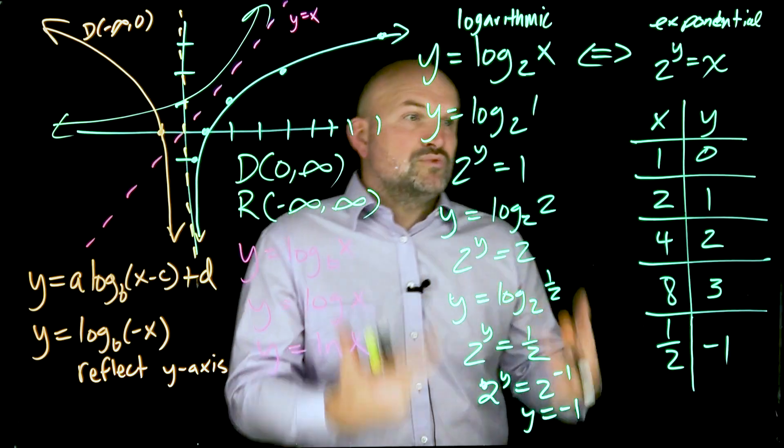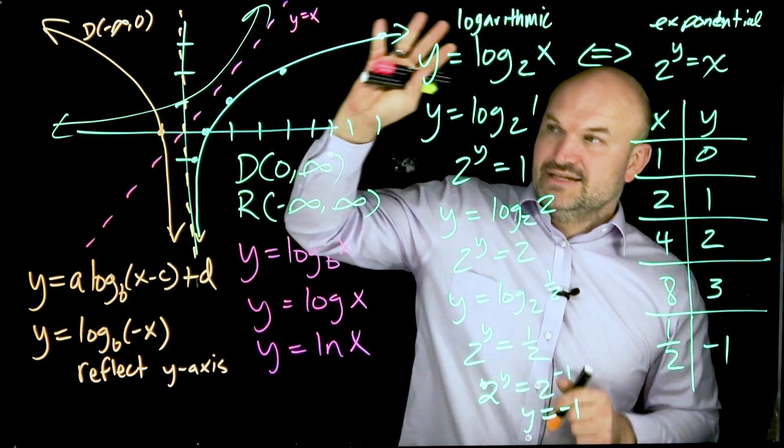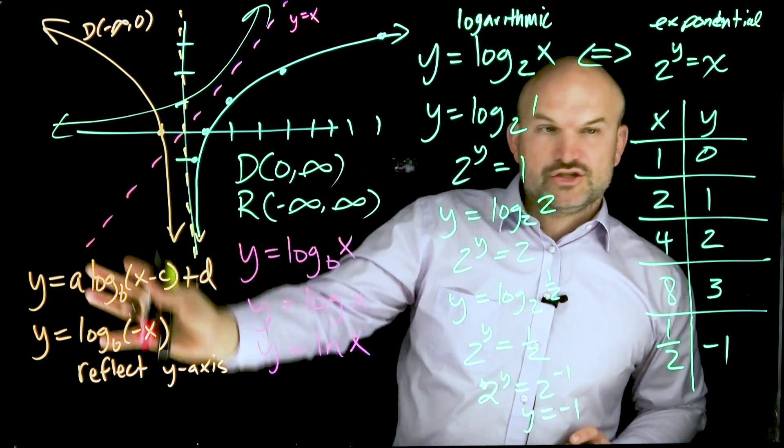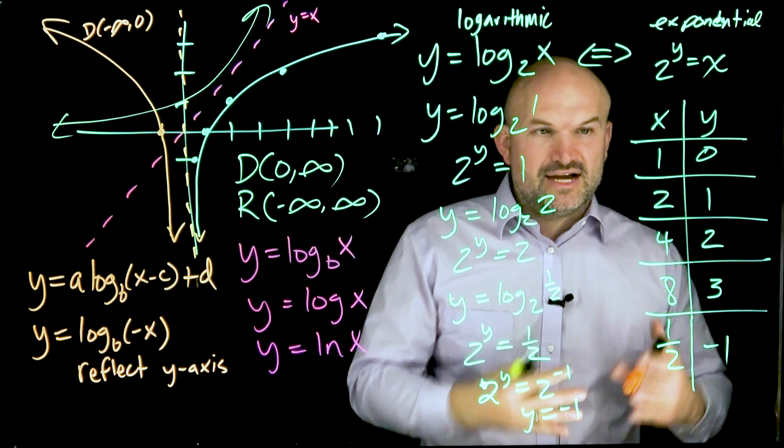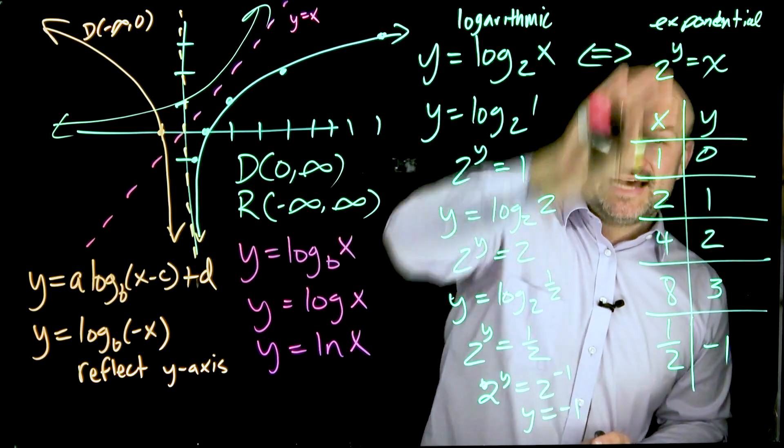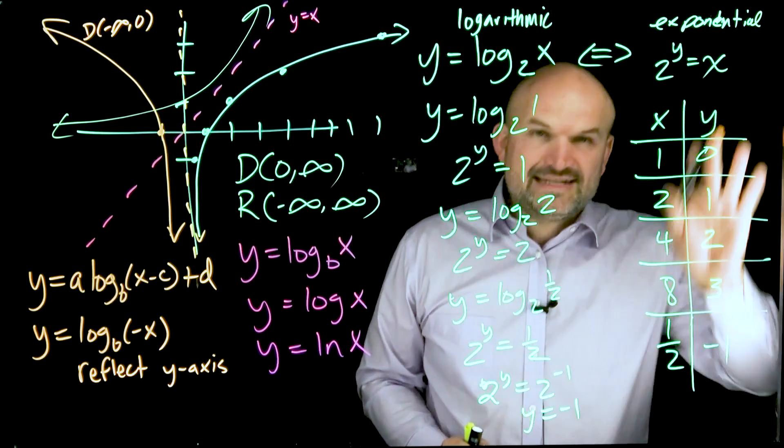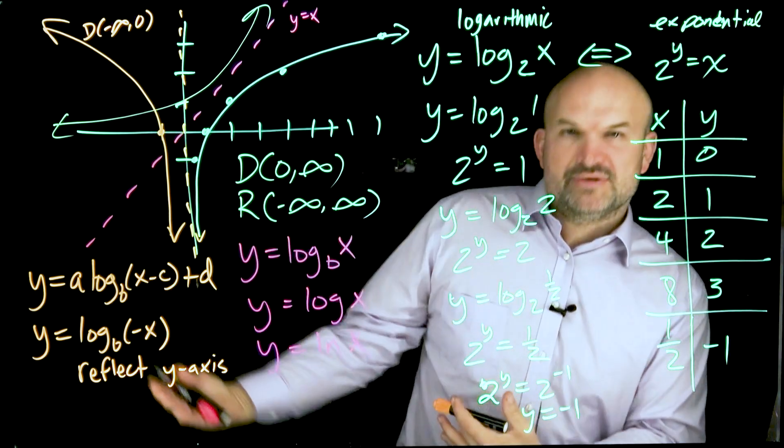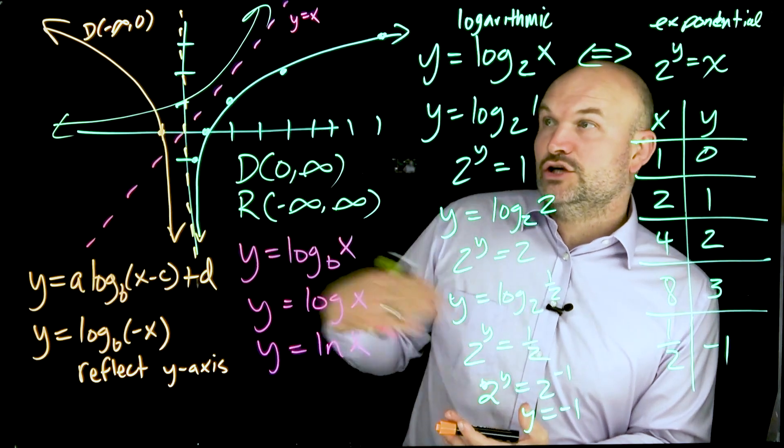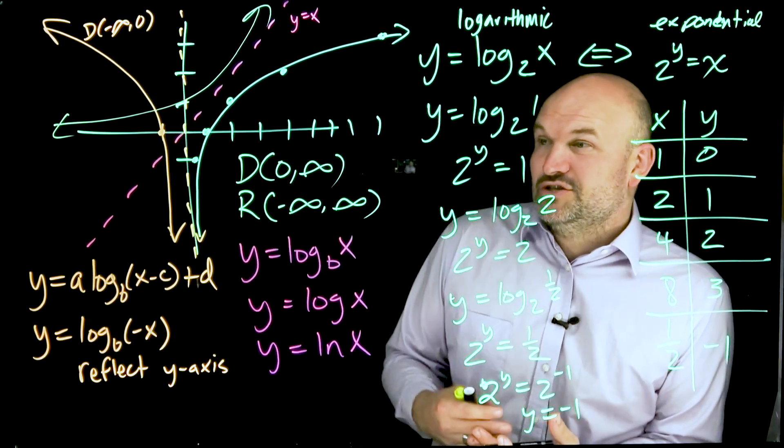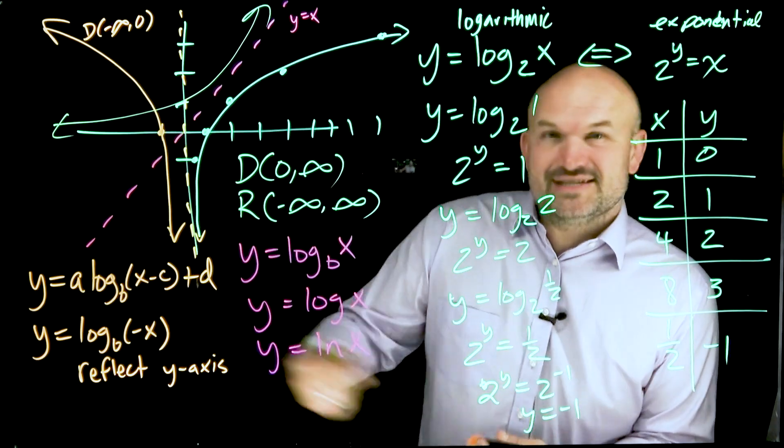But all in all, I think it's just really important to make sure you understand the general shape of this graph, the general domain and range, as well as the transformations. And if you ever get stuck, always revert back to this very simple logarithmic problem. Revert back to exponential form, create a table just to remind yourself of what this graph is going to look like, and then you can go ahead and proceed on that. So hopefully this was a good review for you on graphing logarithmic equations. I think now it's a good time to go into a quick review of the properties of logarithms.